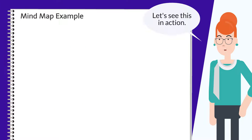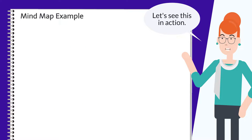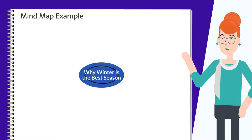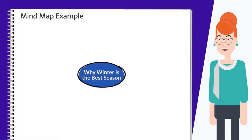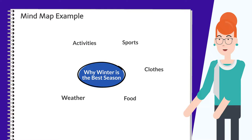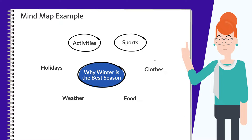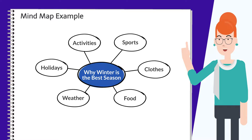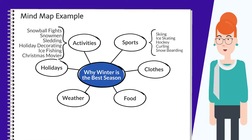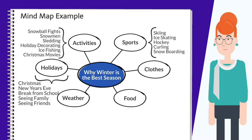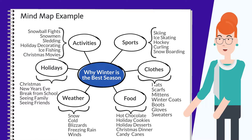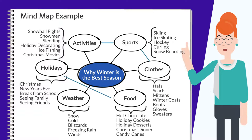Let's see this in action. We start by placing our main idea in the center and drawing a circle around it. Next, we write down related ideas and place them around the main topic. We circle them and connect them with lines to the main idea.